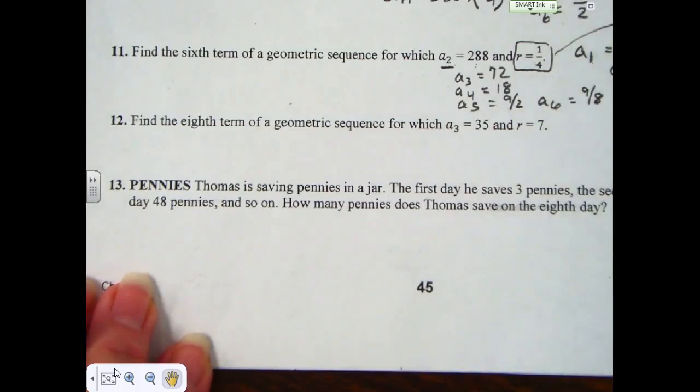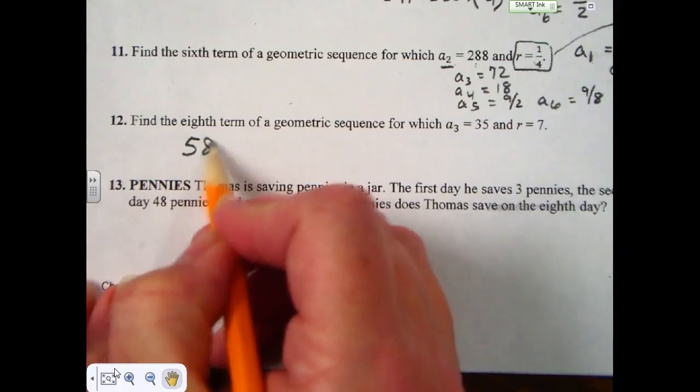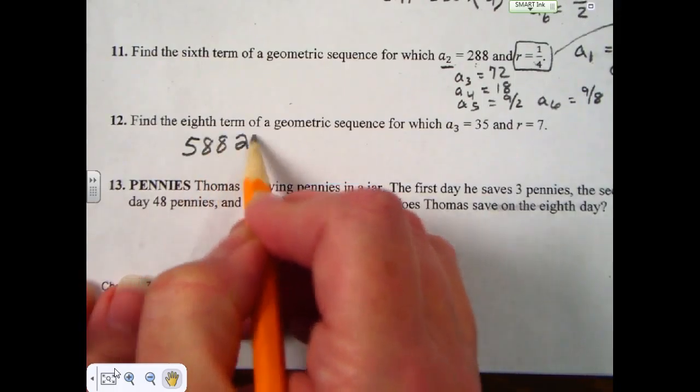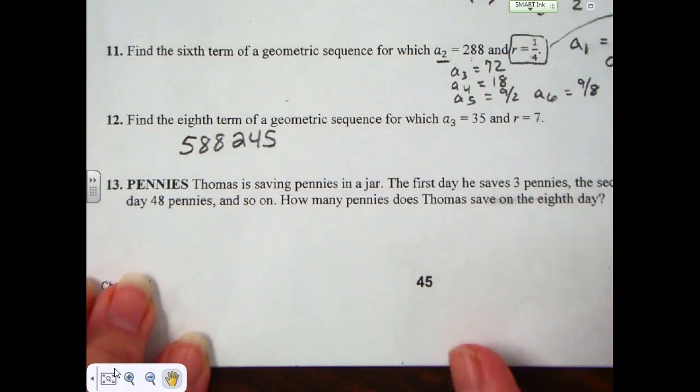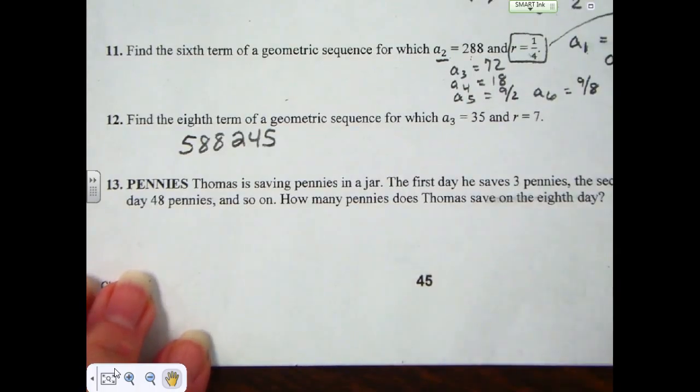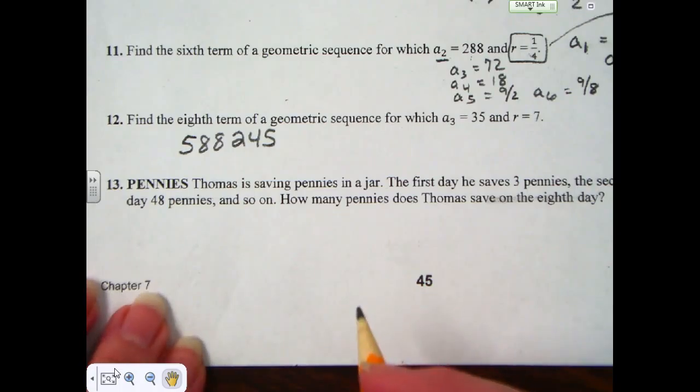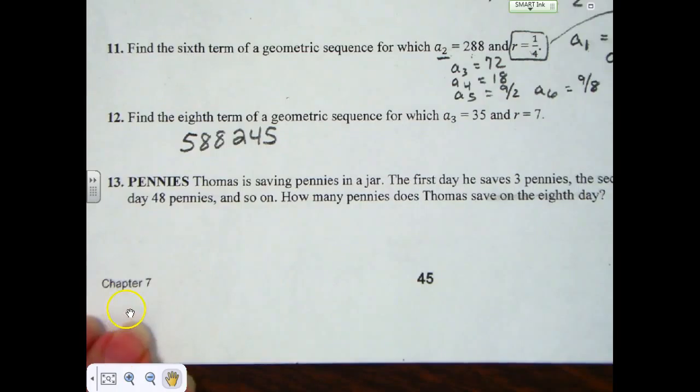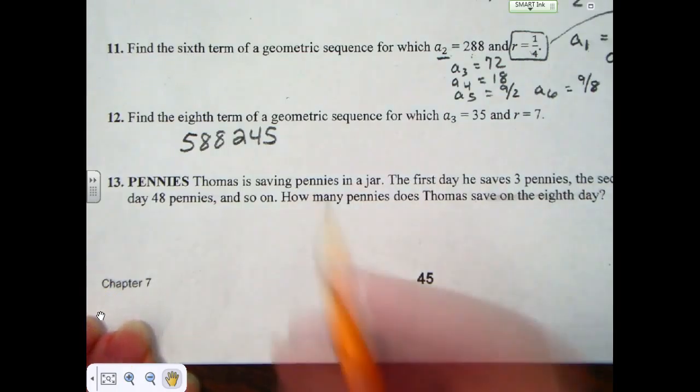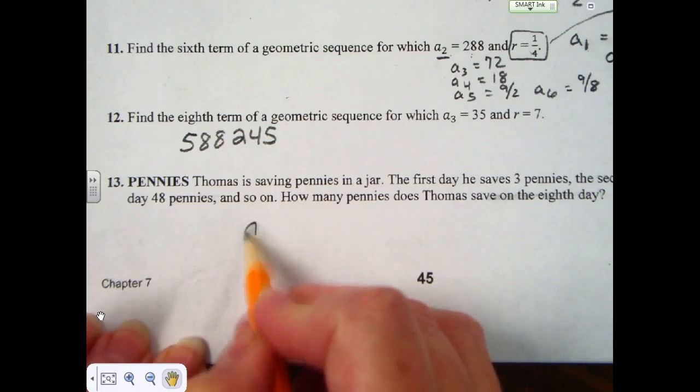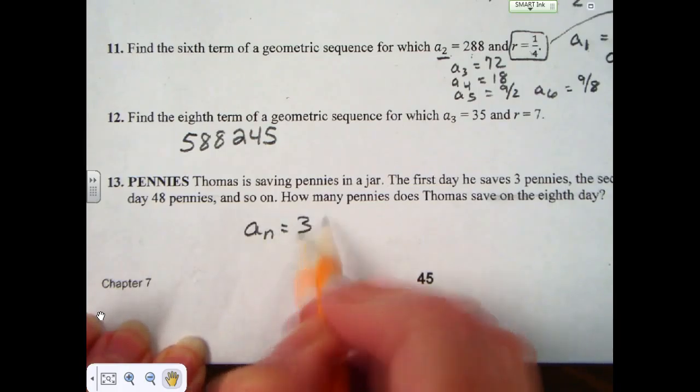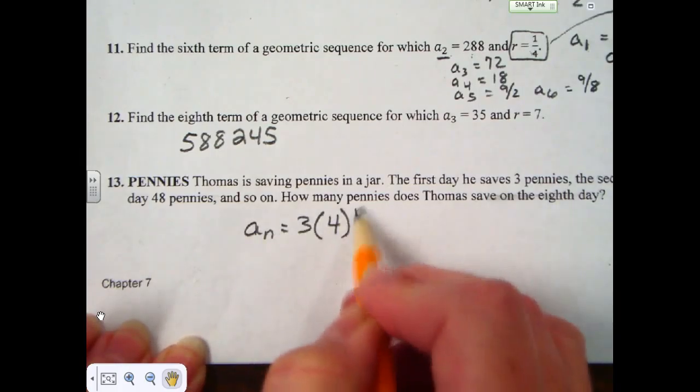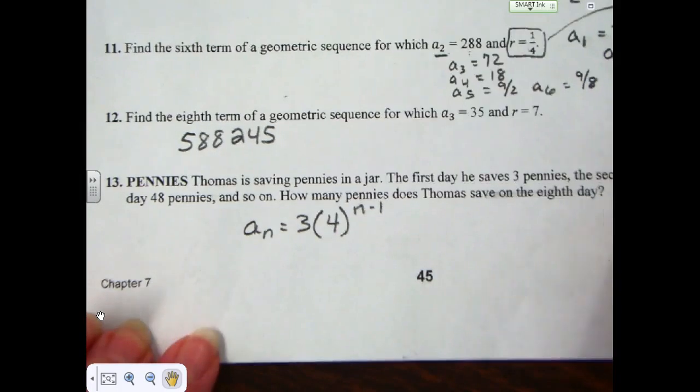The answer to number 12, no matter how you go about doing it, should be 588,245. The answer to number 13, let me pause here, I'm going to give you the equation to figure it out. a sub n equals 3 times 4 to the n minus 1 power, because I looked at the sequence, I made the sequence.